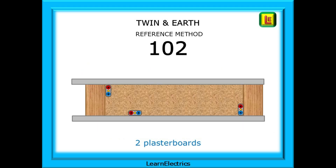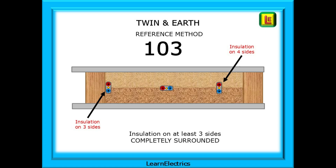Reference method 102 has the cables in the same positions as the previous slides, touching the joists or plasterboard, but now there are two plasterboard surfaces. The cables might be encased in a stud wall. So 102 - two plasterboard surfaces. And now reference method 103 - look at the position of the cables. The cable clipped to the joist now has three of its sides surrounded by thermal insulation. The other cables shown here are completely surrounded by insulation - the worst case scenario for heat loss from the cable. So 103 means at least three sides are covered by insulation.